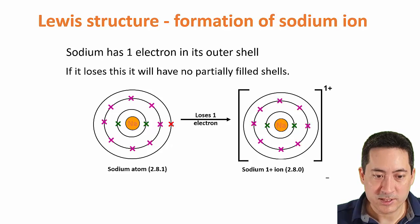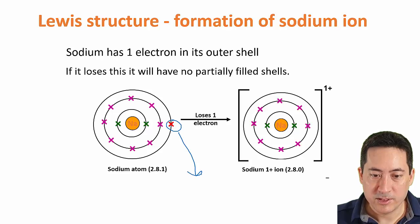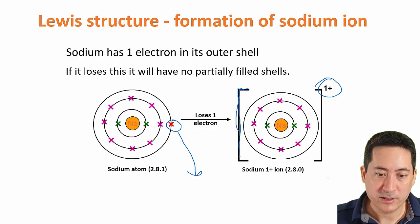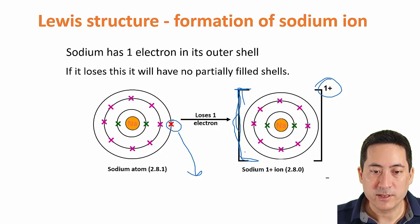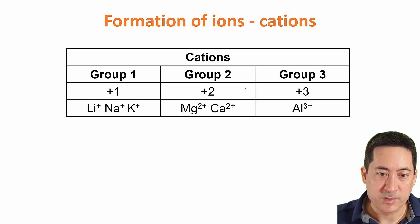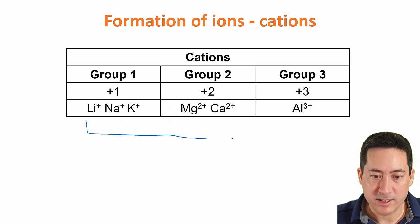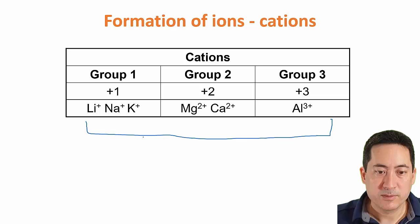So the Lewis structures is in the video following from this, but just to jump in a little bit, I'll show you how to draw the Lewis structures. For the time being this is just the Lewis structure here. So what happens is one electron comes out. When you're drawing ions you need to do the square brackets and put the charge in the corner. That's how you do the Lewis structures for ionic compounds.